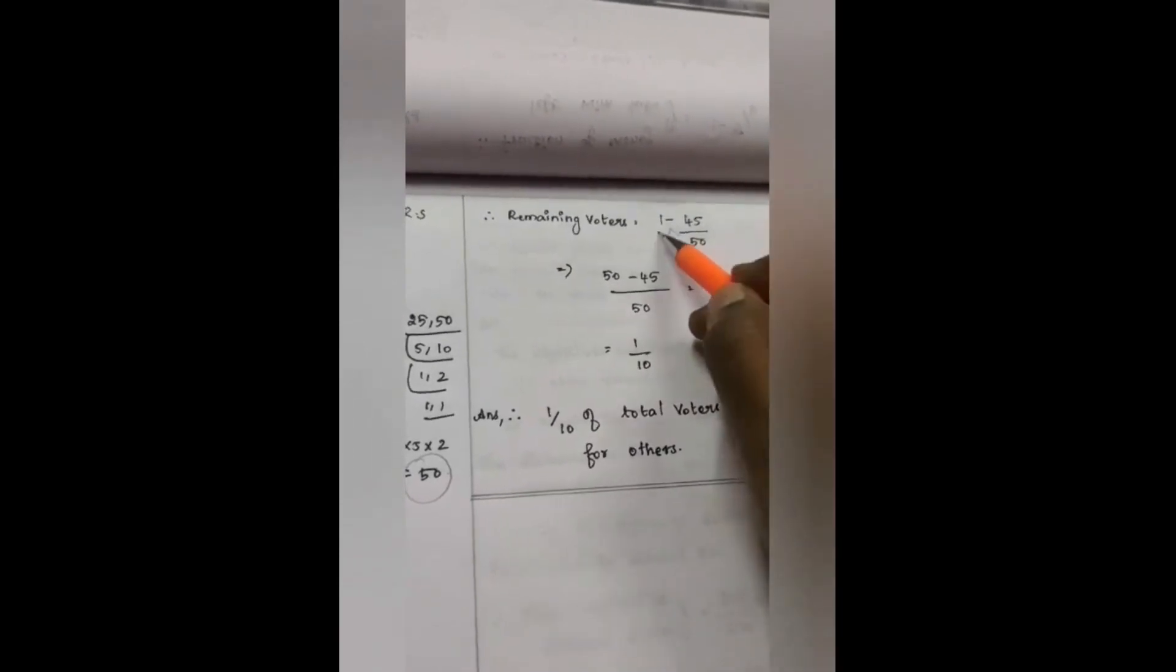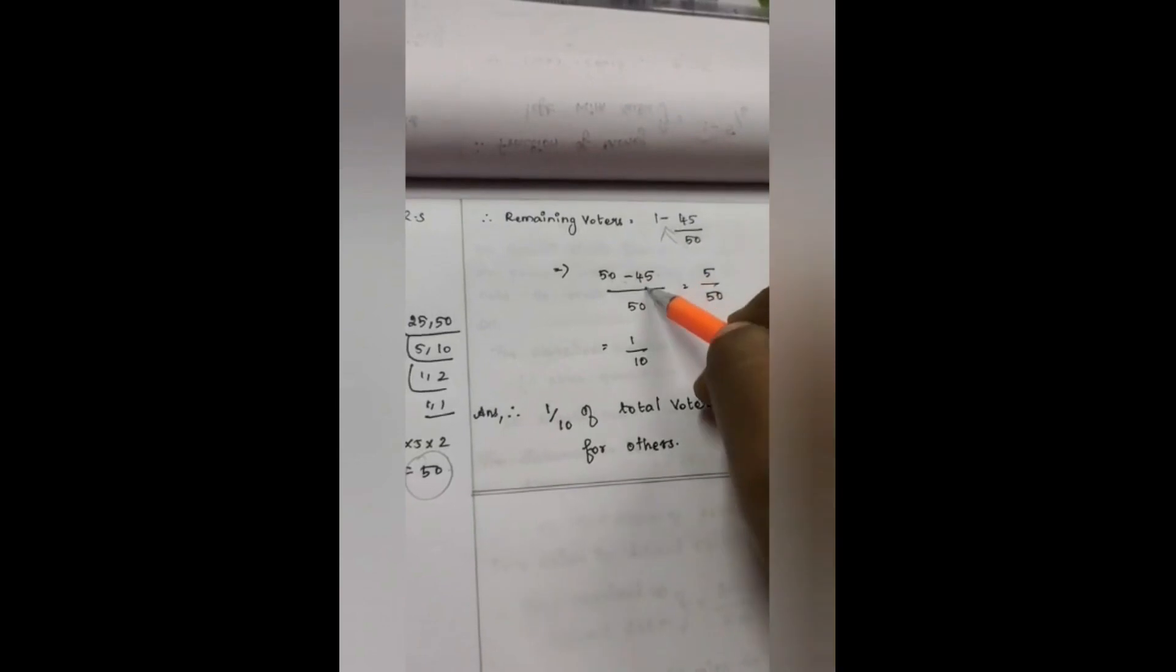I'm going to do the cross multiplication here. 50 minus 45 divided by 50. 50 into 1 becomes 50, minus 45 divided by 50. 50 minus 45 simply 5 by 50. We need to check whether it can be cancelled using same table or not. We can cancel it out using same table, 5.